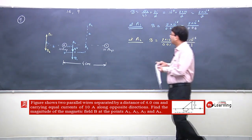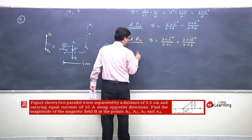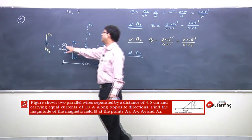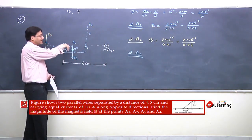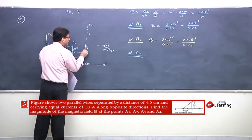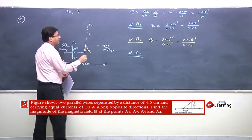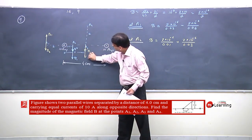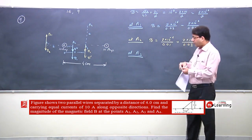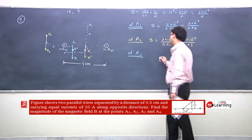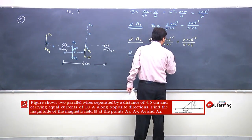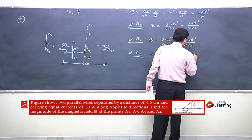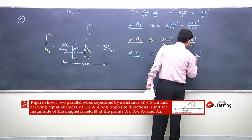At point A3, the same concept applies. For this wire, the magnetic field direction is downward due to right-hand rule. For the other wire as well, the field is downward. Both contribute in the same direction (downward) at A3. So net B = 2 × 10⁻⁶ / 0.03 + 2 × 10⁻⁶ / 0.03.